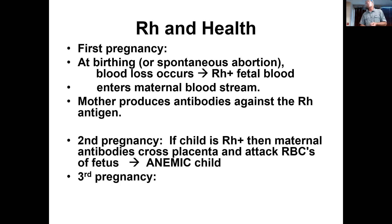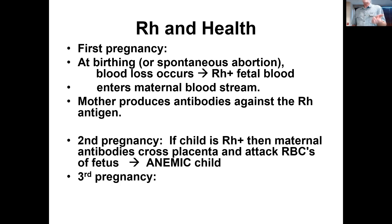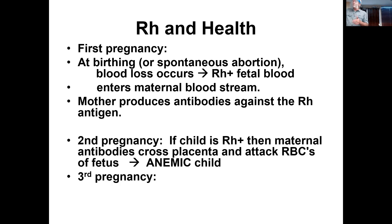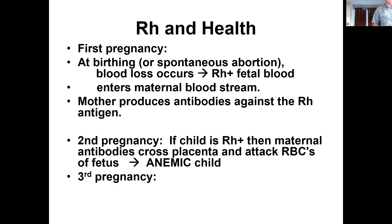That's why we call it RH incompatibility. With the second pregnancy, the child will often be anemic with systemic issues. With a third pregnancy, the response is even greater — with each succeeding pregnancy, the response becomes greater and more problematic for the developing child.